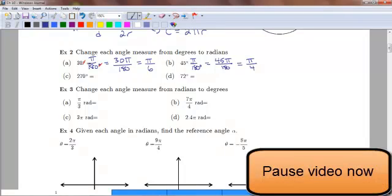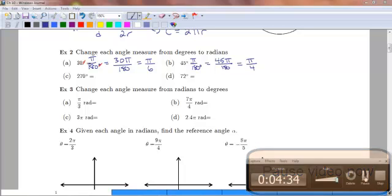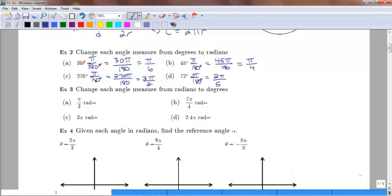Now I want you to pause the video for a second and do these next two examples of 270 degrees and 72 degrees. Okay, so if you worked out those two examples, you should have gotten that 270 degrees is really 3π over 2, and that 72 degrees is 2π over 5. Again, if you need to pause the video at this time to go back and verify or fix anything, please do so.